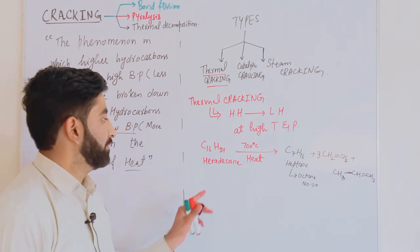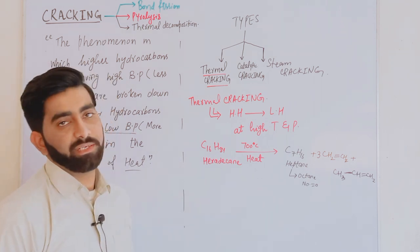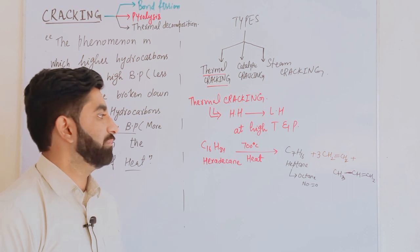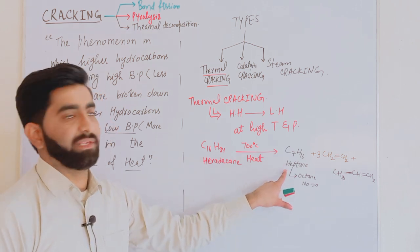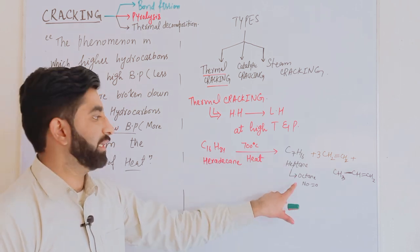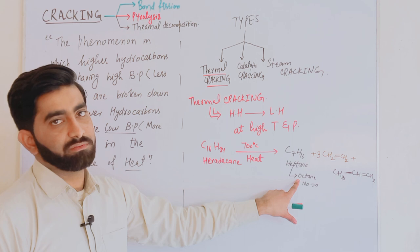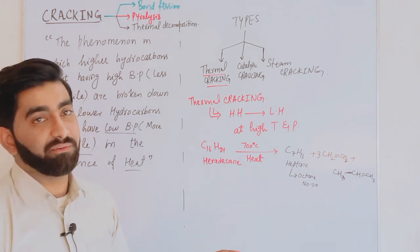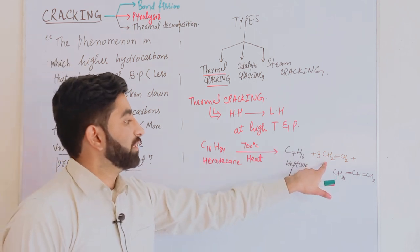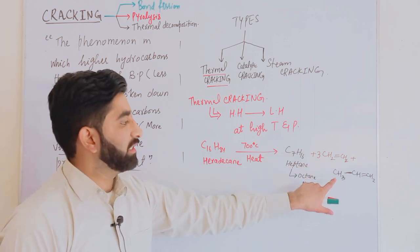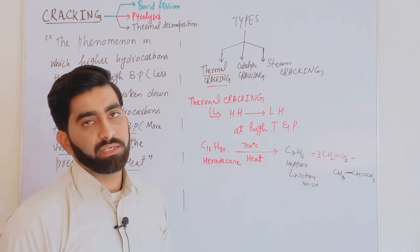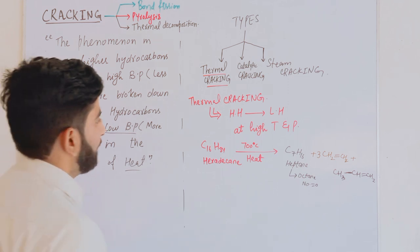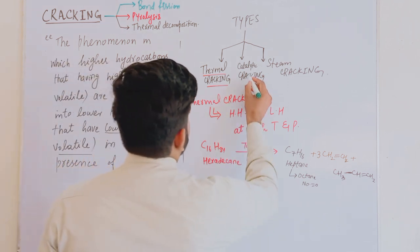When we break hexadecane at high temperature and high pressure, three products are formed: N-heptane with an octane number of zero (a very bad fuel), ethene, and 1-propene.